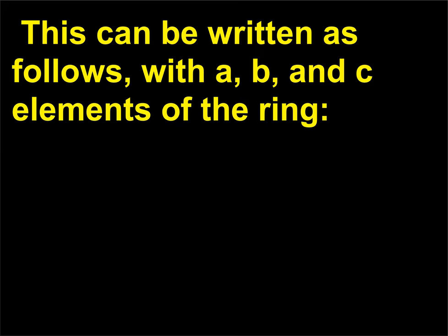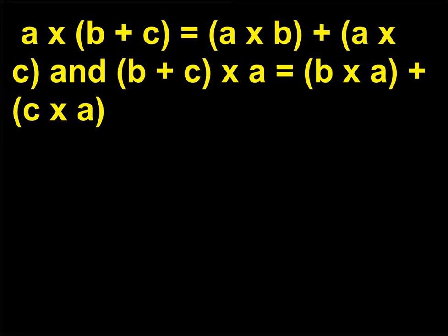This can be written as follows, with a, b, and c elements of the ring: a×(b+c) = a×b + a×c, and (b+c)×a = b×a + c×a.